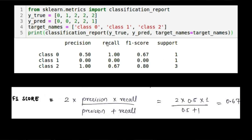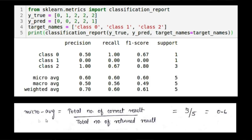Support is how many times each class appears in the true values. Class 0 appears 1 time (support=1), class 1 appears 1 time (support=1), class 2 appears 3 times (support=3). For support, we focus on true values, not predicted values. Micro average is total correct results divided by total written results. Here, 3 out of 5 results are correct, so micro average = 3/5 = 0.6 for precision, recall, and F1 — since it counts everything together.